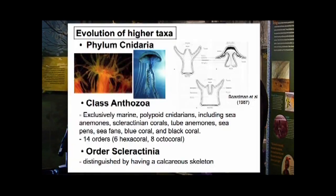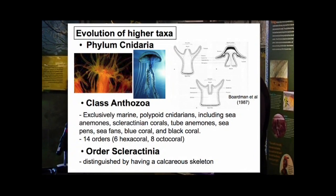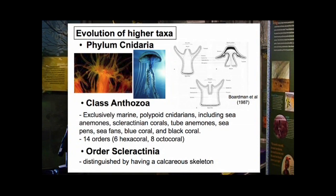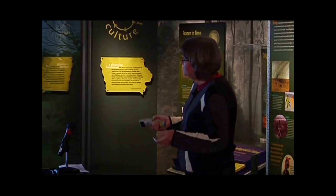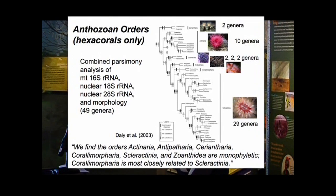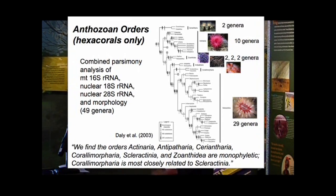How can evolution contribute to conservation measures to protect corals? Corals belong to the phylum Cnidaria, class Anthozoa, order Scleractinia. The phylum Cnidaria is characterized by radial symmetry, a central mouth surrounded by tentacles, two different body forms (polyp and medusa), only two germ cell layers—making them very simple organisms—and nematocysts along their tentacles.